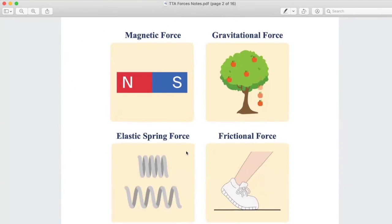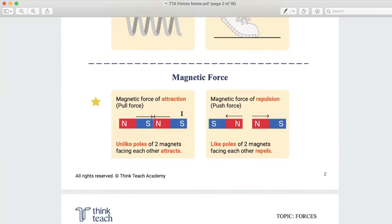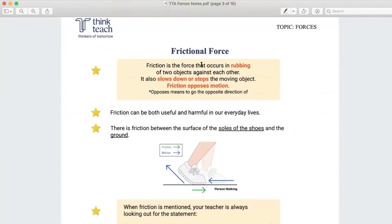So, four types of forces that you need to know for your syllabus. Magnetic force, gravitational force, elastic spring force, frictional force. Okay, so magnetic force, there are always two types of magnetic force. Okay, so magnetic force of attraction, magnetic force of repulsion. Right, so next one is frictional force. So, frictional force can only be when they are touching each other, right? So, remember, just now we do question four. If they are not touching each other, then there is no frictional force between the two objects. Okay?